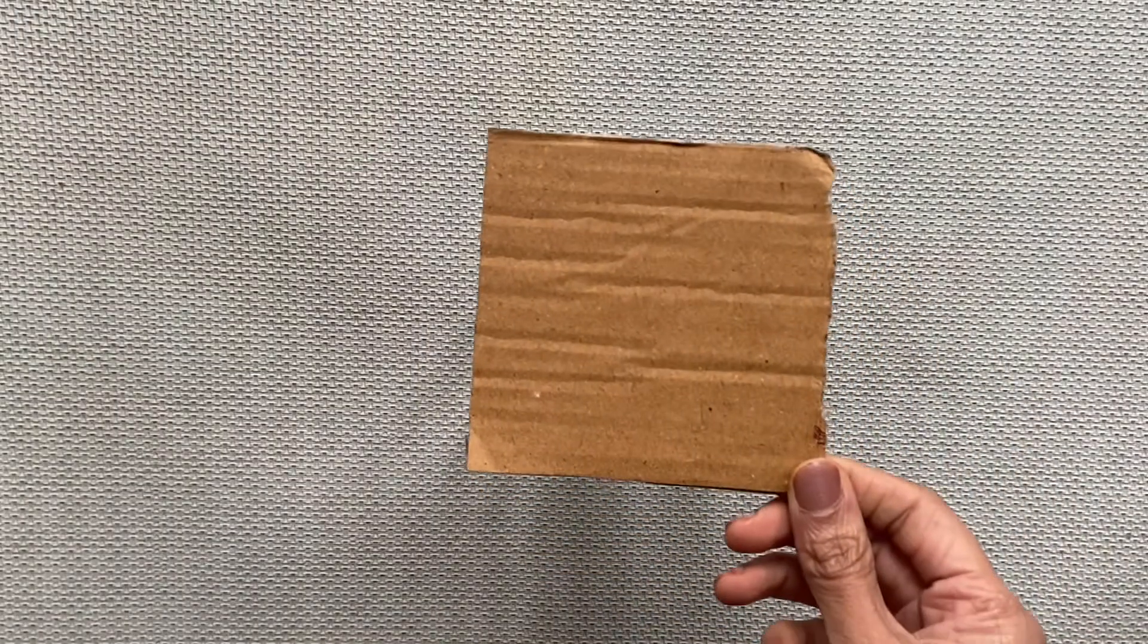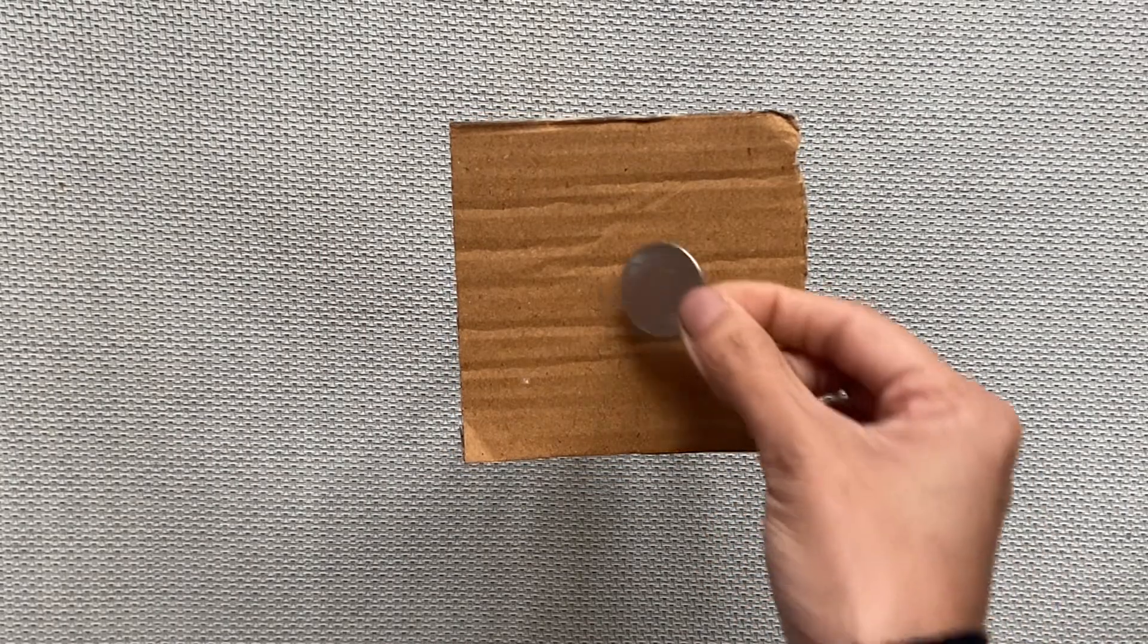Place a glass on the mat and place cardboard on top of the glass. Now place a coin at the center of the board.